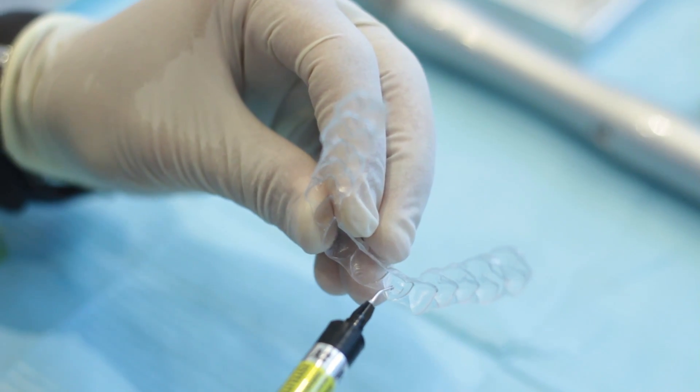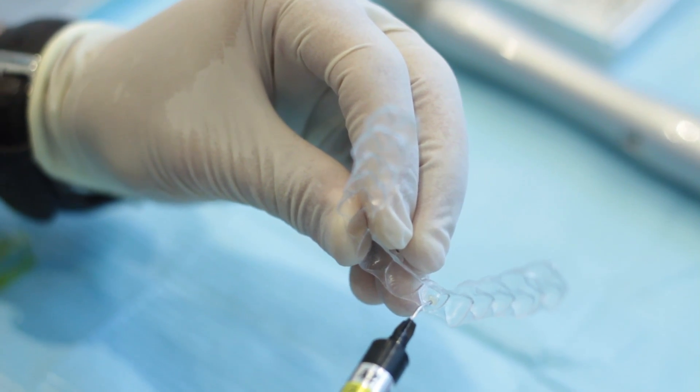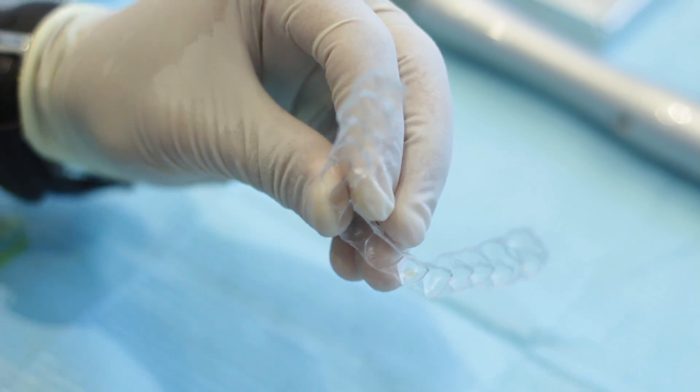Then we begin to fill the attachment template with composite material. You can use conventional restorative composite to fill the attachment template, or as in this case, flowable composite material.